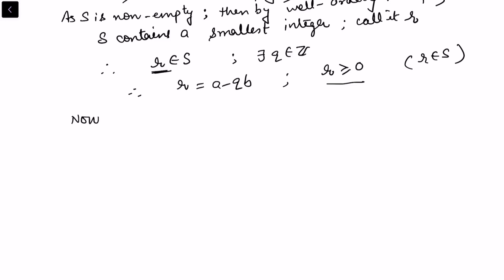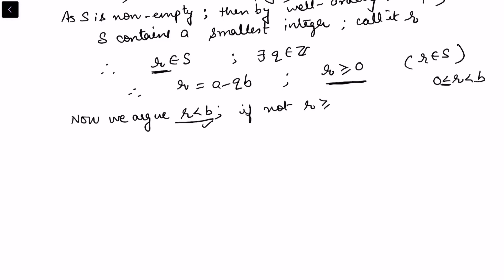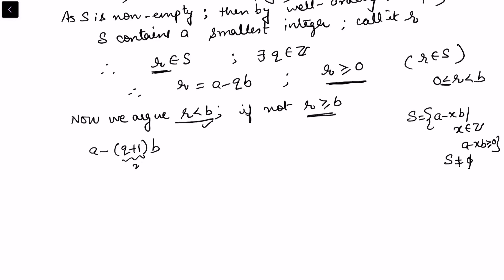Now we need to argue that r < b. Once we prove r < b and r ≥ 0, the inequality 0 ≤ r < b will be established. Suppose for contradiction that r ≥ b. Recall that S = {a − xb | x ∈ ℤ, a − xb ≥ 0} is a non-empty set. Consider the element a − (q + 1)b, obtained by selecting x = q + 1.